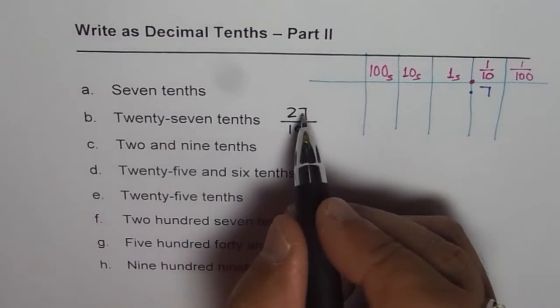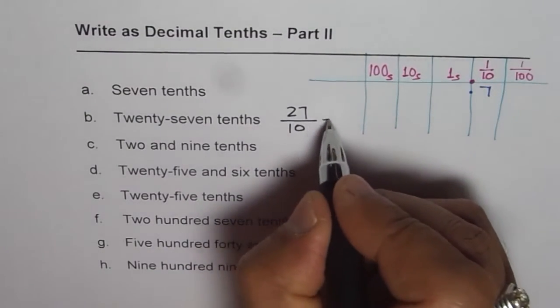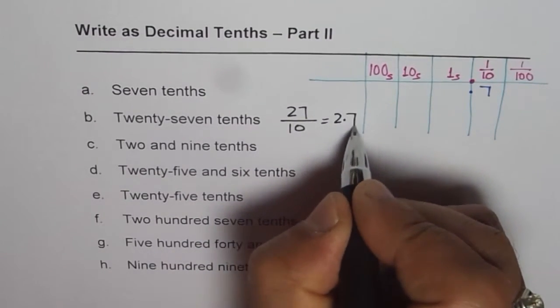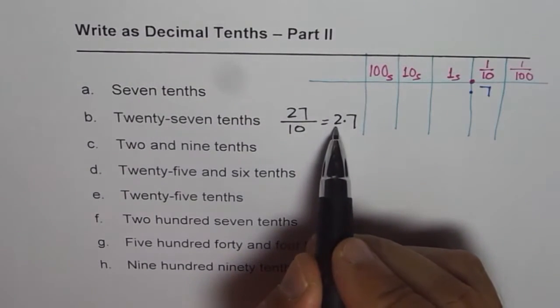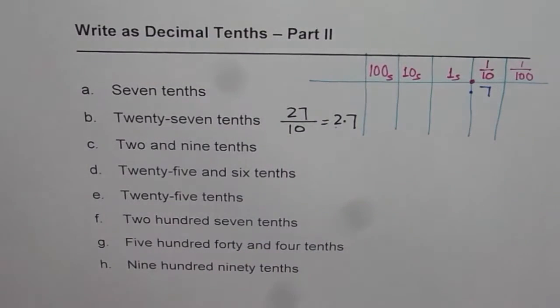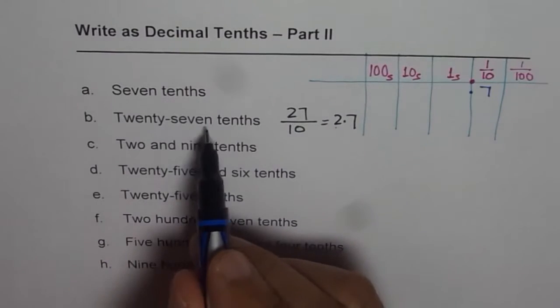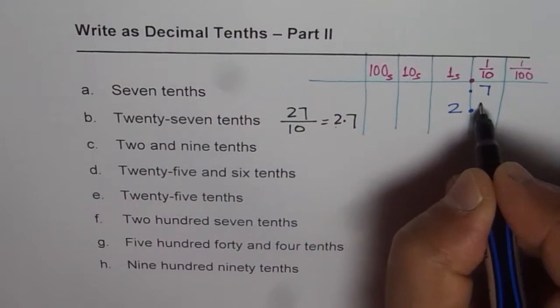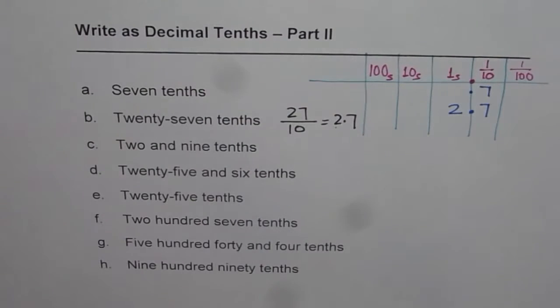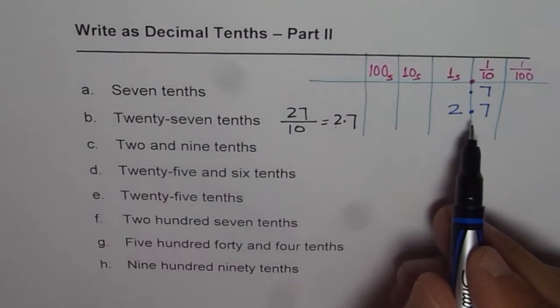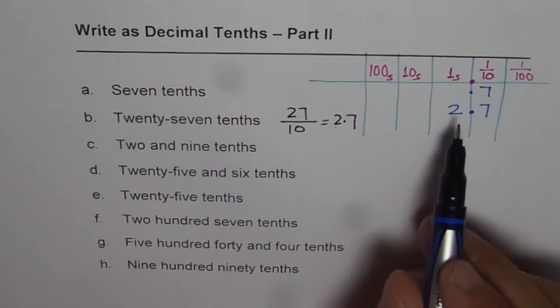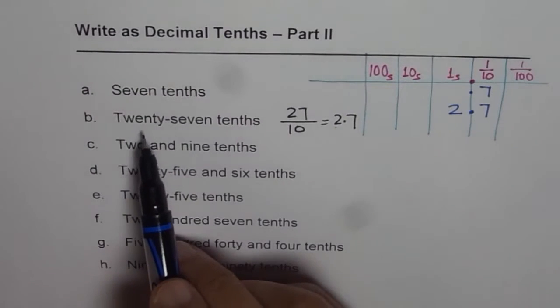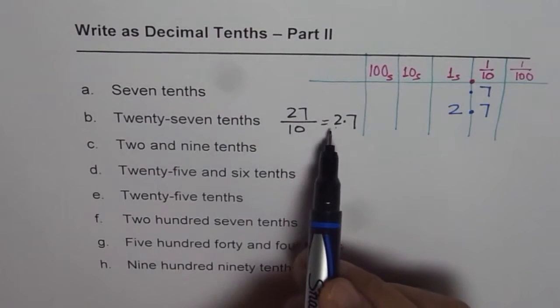When you divide 27 by 10, you get 2.7. Does it make sense? Twenty-seven tenths? Yes it does. So twenty-seven tenths is 2.7. Take a moment to understand this part. That's another way of writing twenty-seven tenths: 2.7.